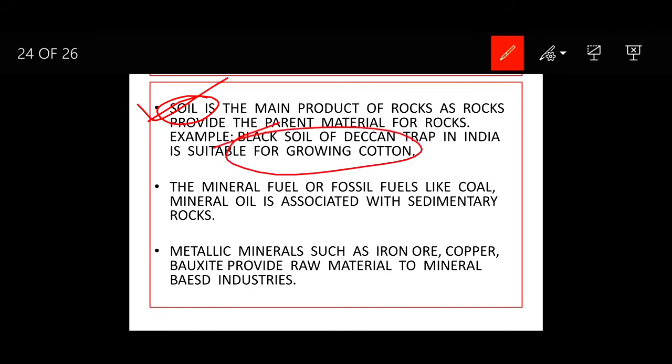Black soil of Deccan trap is very good for growing cotton. The mineral fuel we get, like coal and mineral oil like petroleum, all we get from sedimentary rocks. So they have high economic value.